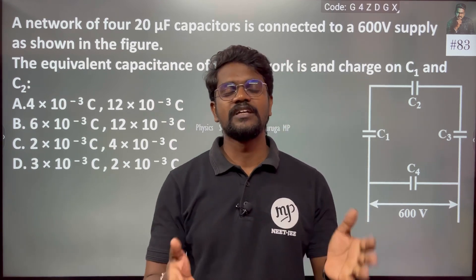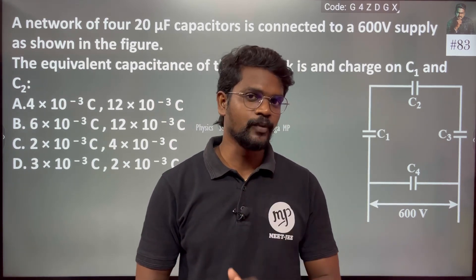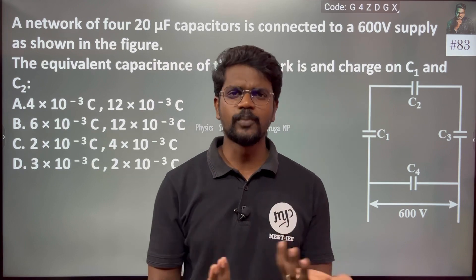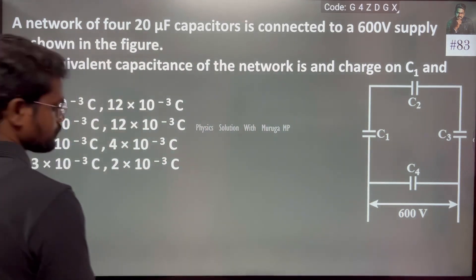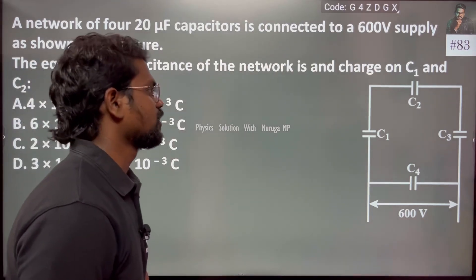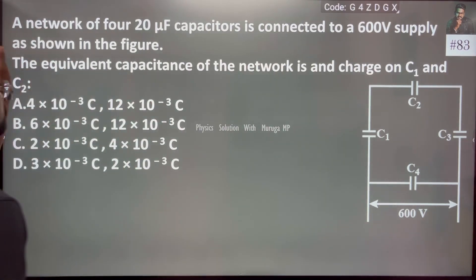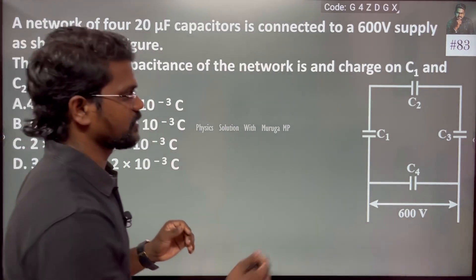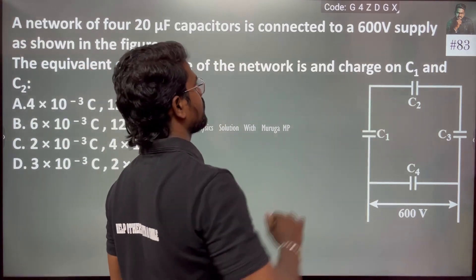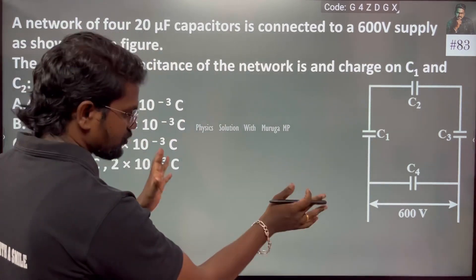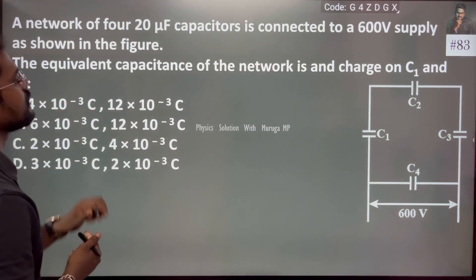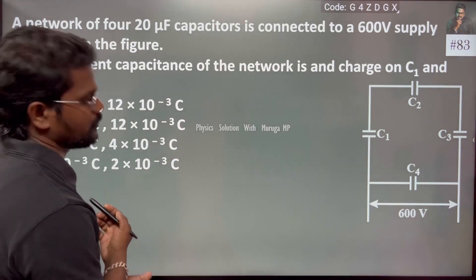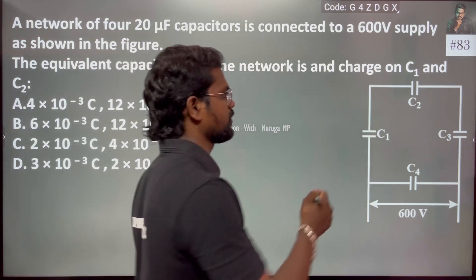Hi everyone, this is problem 83, a continuation of the previous problem. A network of four 20 microfarad capacitors are connected to a 600 volt supply as shown in the figure. The question asks for the equivalent capacitance of this network, which was covered previously, and now we need to find the charge.